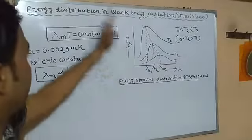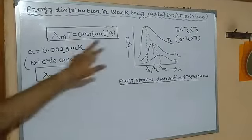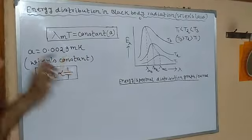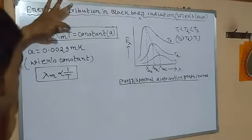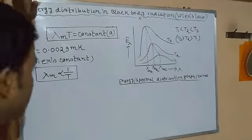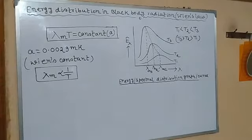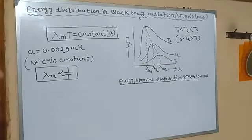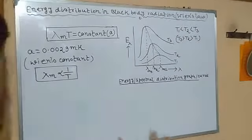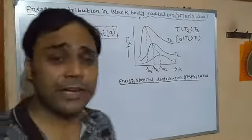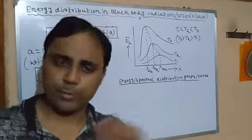This is the mathematical expression of Wien's displacement law. The value of the constant is 0.0029 meter·Kelvin — taking lambda in meters and absolute temperature in Kelvin — and this is called Wien's constant. Through this we can calculate the temperature inside stars. So this covers energy distribution of black body radiation and Wien's displacement law. Hope you have understood. We'll meet in the next video.